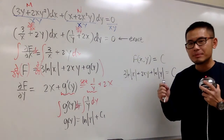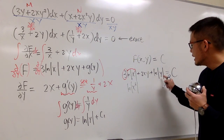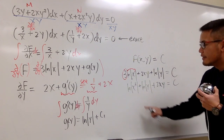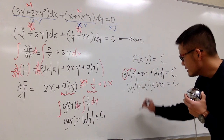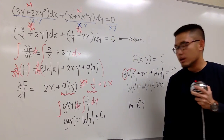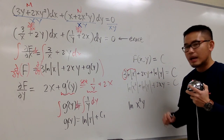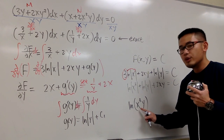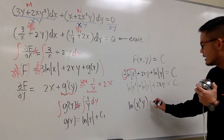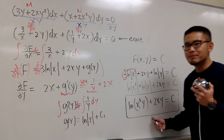To match the answer in the back of the book: bring the 3 to the exponent to get ln|x³|, then add ln|y| — by the log property, adding logs means multiplying the inside, giving ln(x³y). The solution to a differential equation should be continuous, so take the positive side and use parentheses instead of absolute value. So the final answer is ln(x³y) + 2xy = C. That's it.